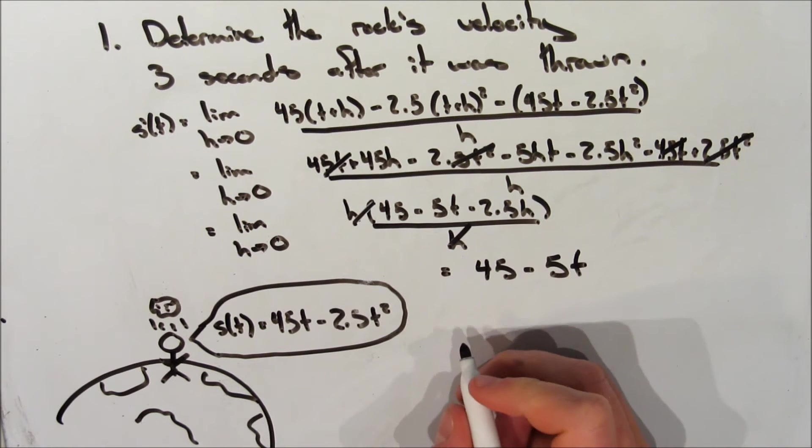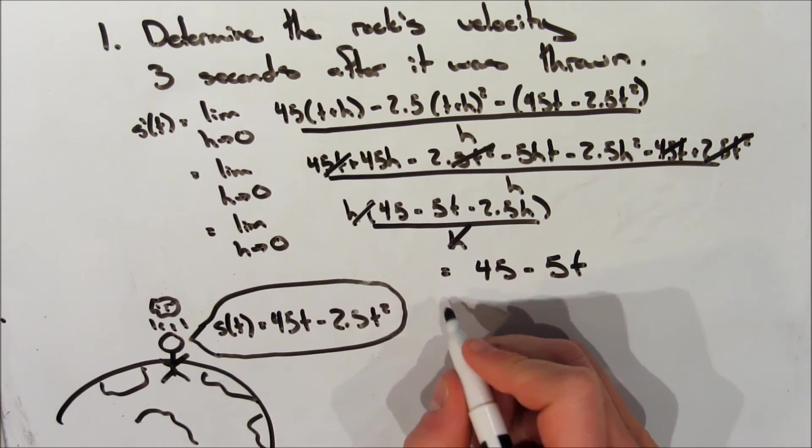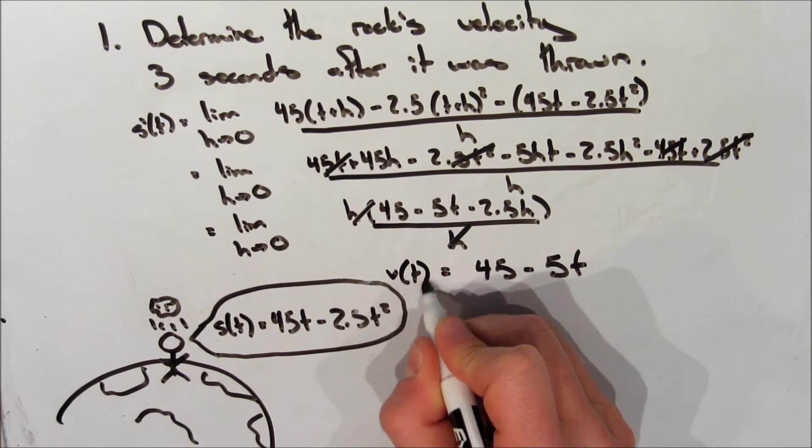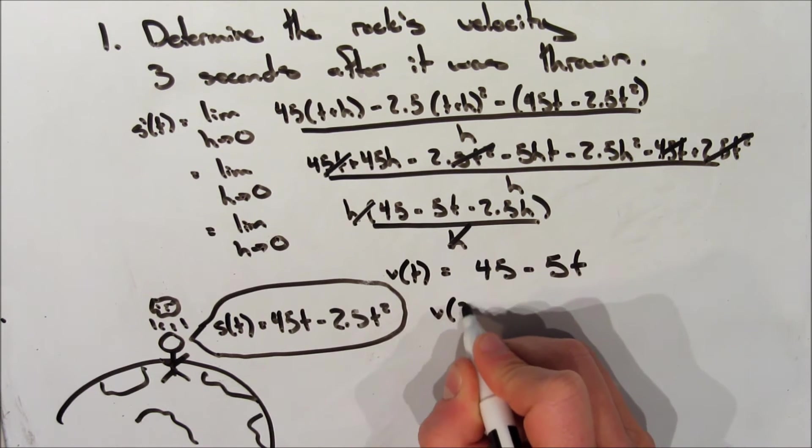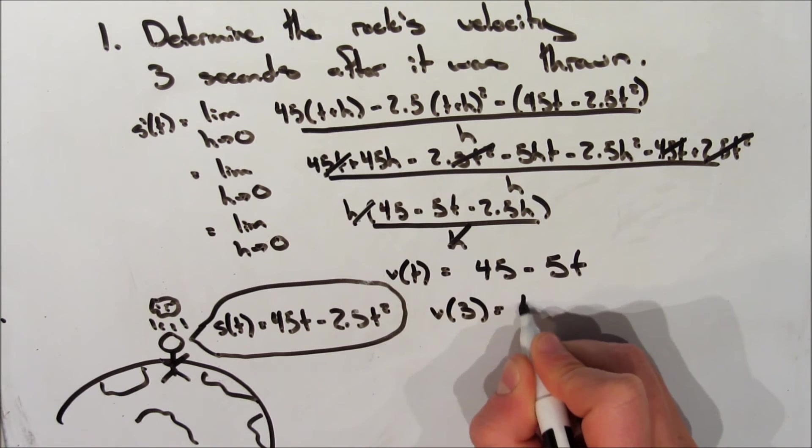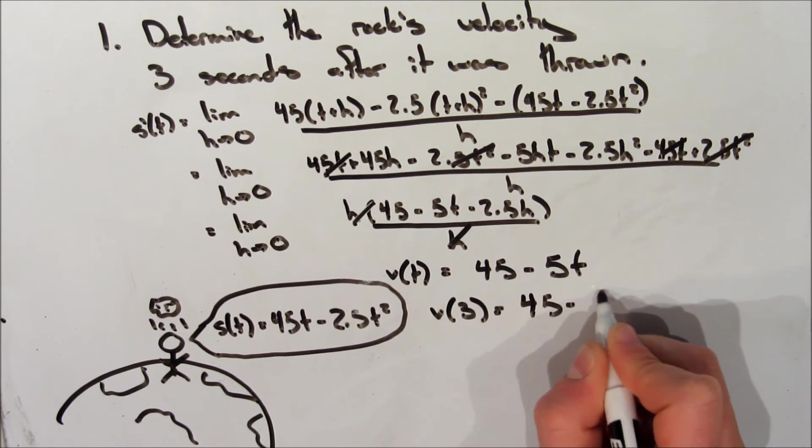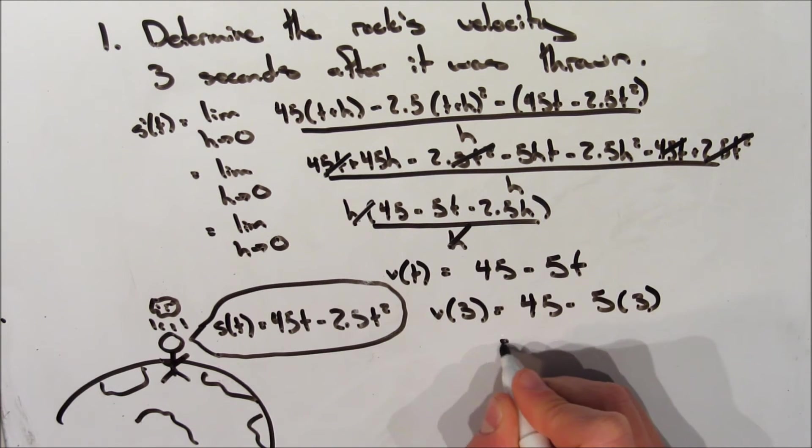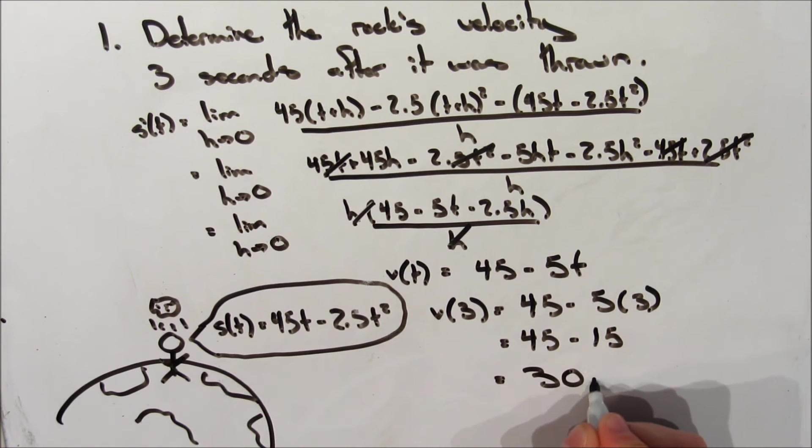So we're just left with 45 minus 5t. Now we're not quite done with the question yet. This is just our velocity function. So now we're going to sub in three into the velocity function for t, because we want the time after three seconds have passed. So after carrying out these steps, that's going to give us it is traveling 30 meters per second after three seconds.